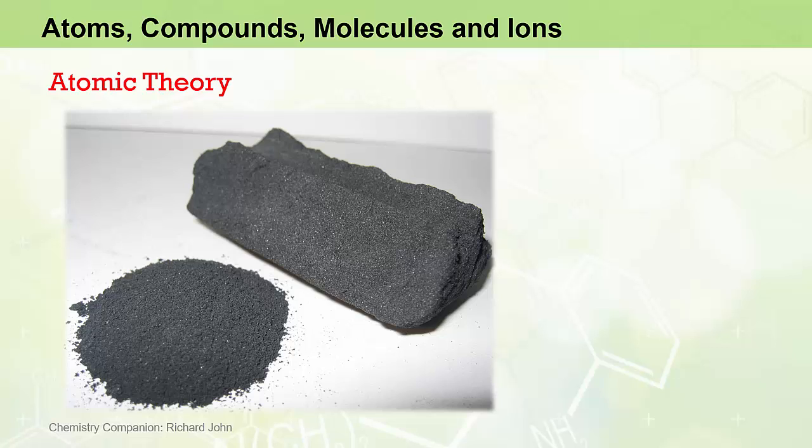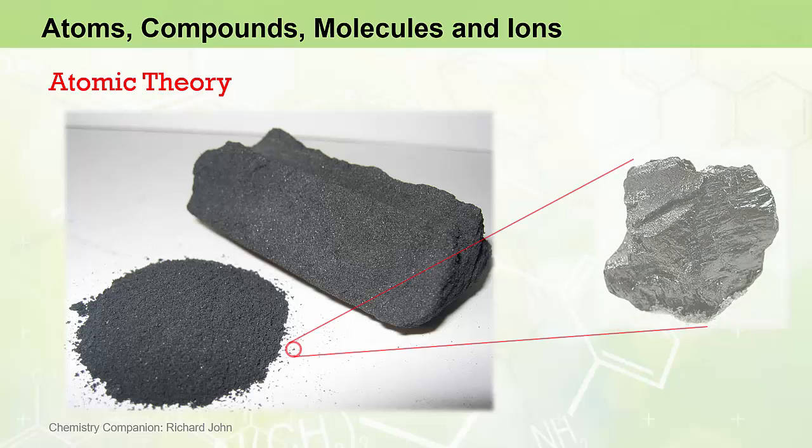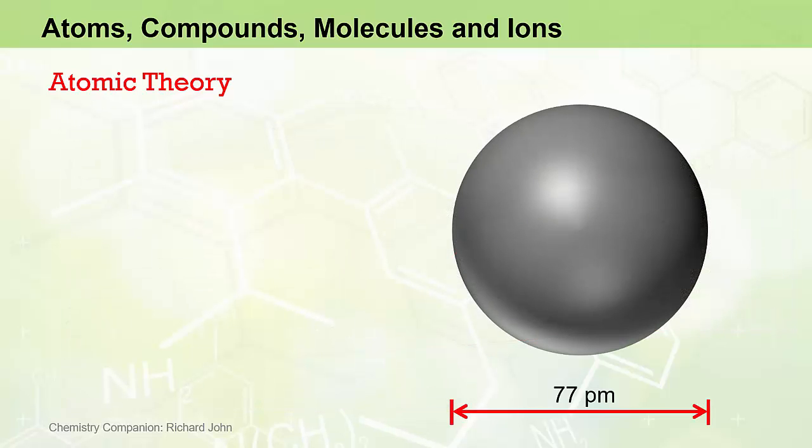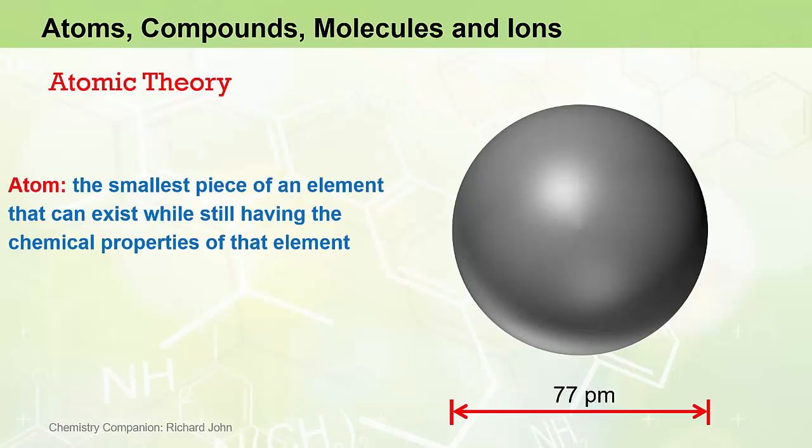Suppose we take a pure piece of the element carbon and we grind it up, which is a physical process. Then suppose we take one of the tiny granules of carbon and cut it in half, and then cut it in half again and again and again until we eventually end up with an incredibly small piece of carbon that we can no longer cut in half. That tiny piece of carbon, which would be about 77 picometers in diameter, would be called an atom of carbon. Atoms are considered the smallest piece of an element that can exist while still having the same properties of that element.